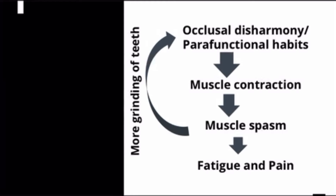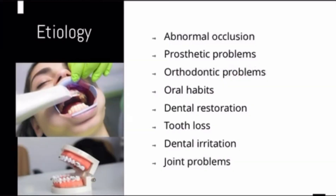Etiological factors include: abnormal occlusion, prosthetic problems such as an ill-fitting prosthesis, orthodontic problems like deep bite or overbite, oral habits, dental restorations that are overfilled or underfilled, tooth loss leading to unbalanced occlusion, dental irritation, and problems with the joint itself.